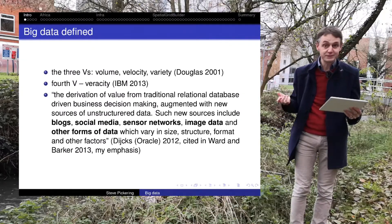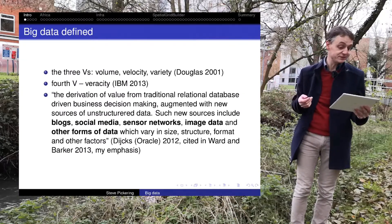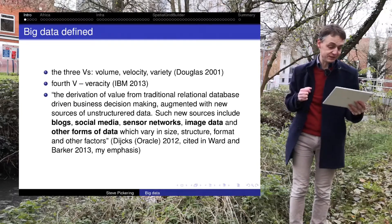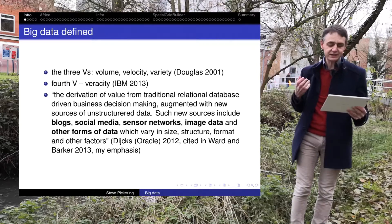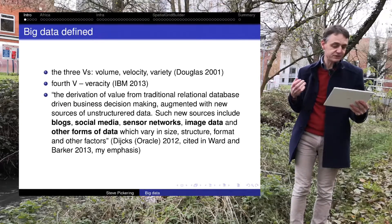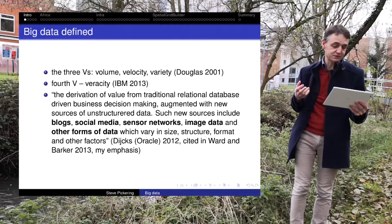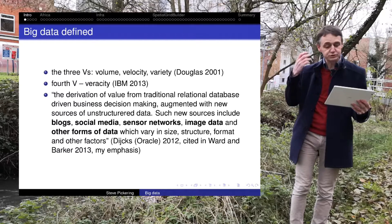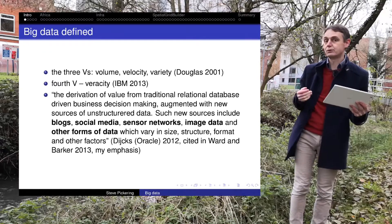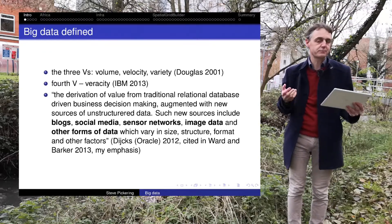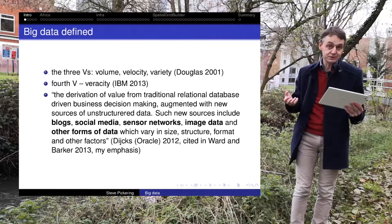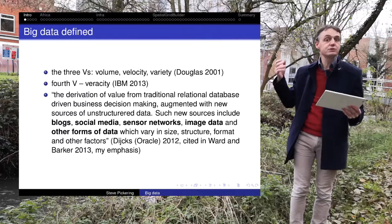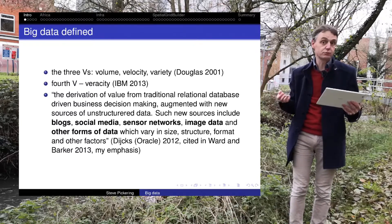We need to define our terms first of all. Big data has been defined as the three V's: volume, velocity and variety. IBM added a fourth V — veracity. Dykes for Oracle defines it as the derivation of value from traditional relational database-driven business decision making, augmented with new sources of unstructured data, such as blogs, social media, sensor networks, image data and other forms. Those are the things I use in my research to answer old political questions using new types of data.